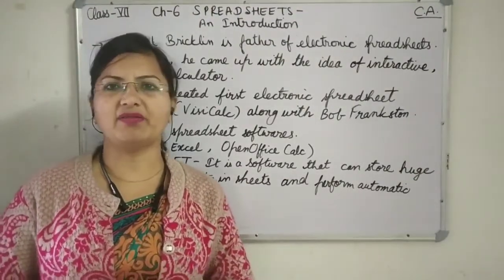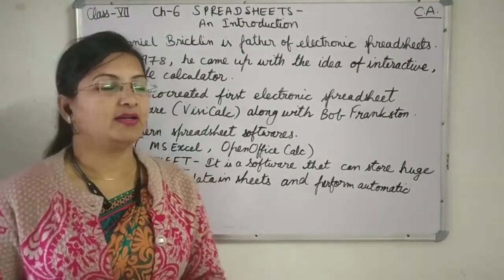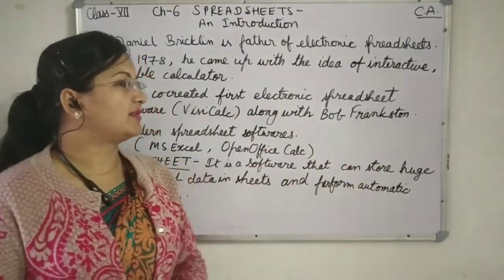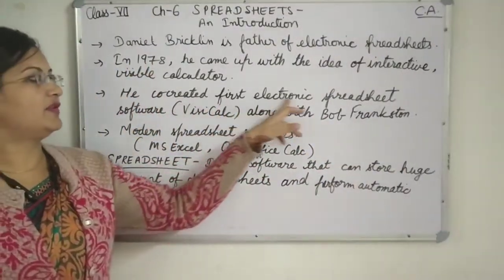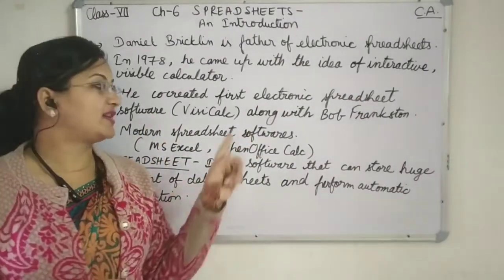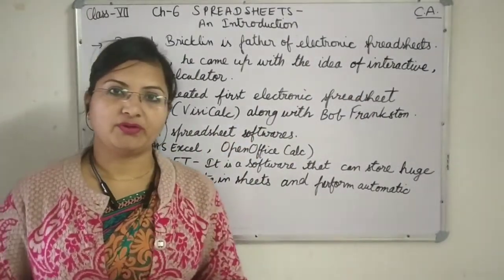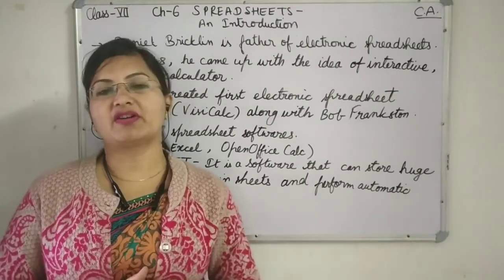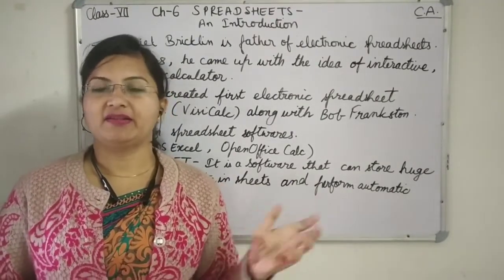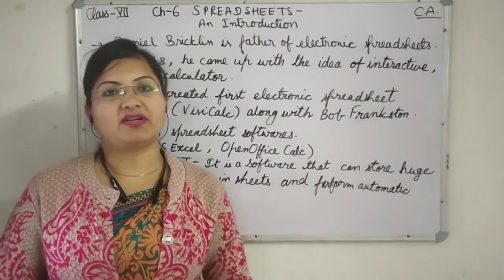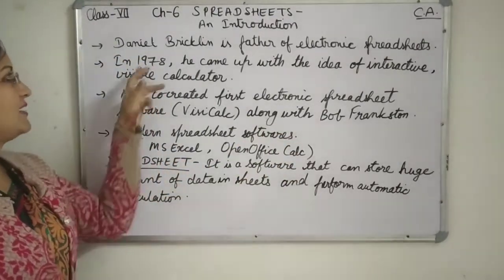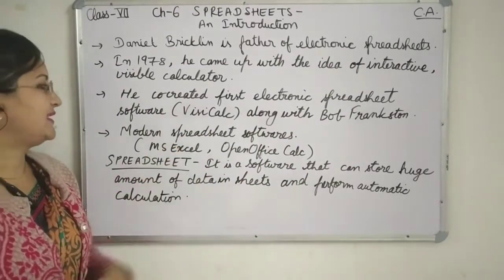It was a simple one earlier. With Bob Frankston, he invented the first electronic spreadsheet software and it was known as VisiCalc. So VisiCalc is the primitive version of MS Excel or OpenOffice Calc — the software created by Bob Frankston and Daniel Bricklin.